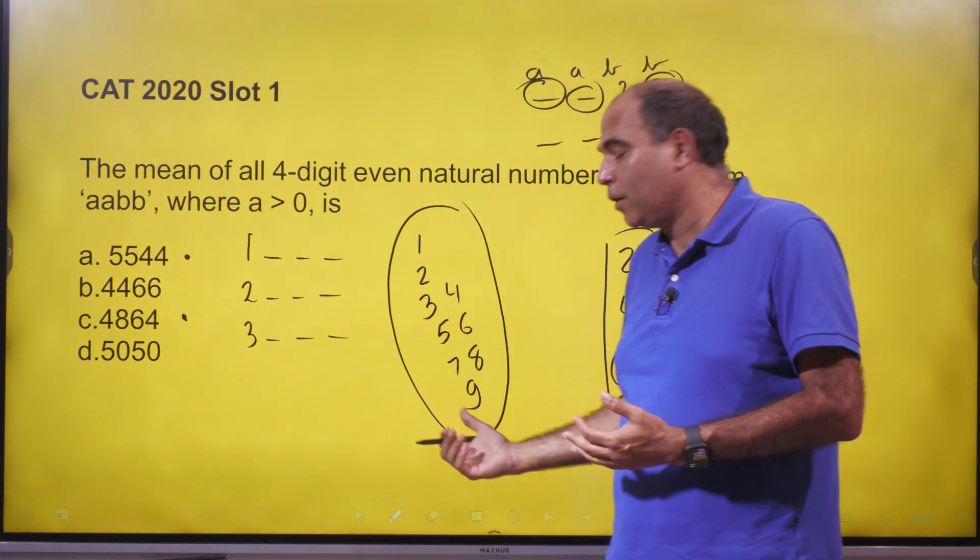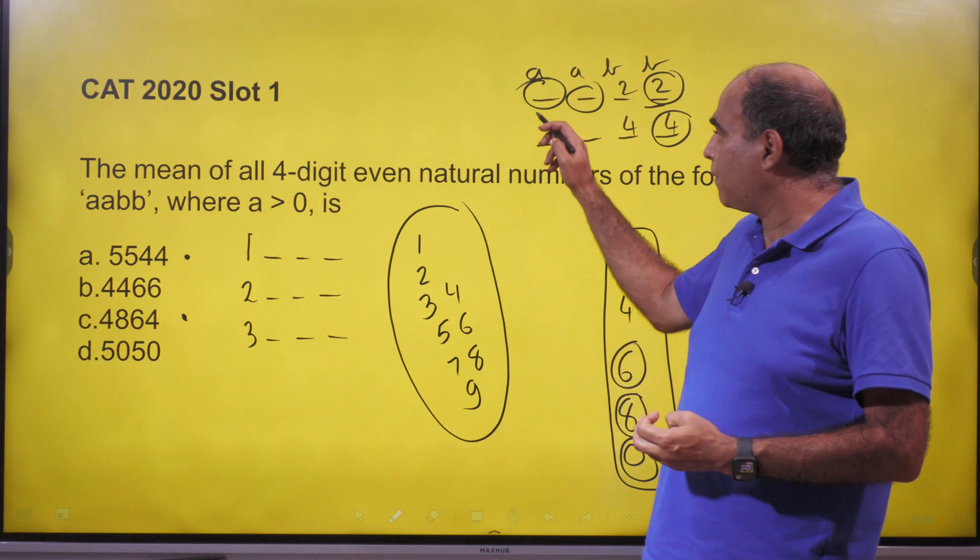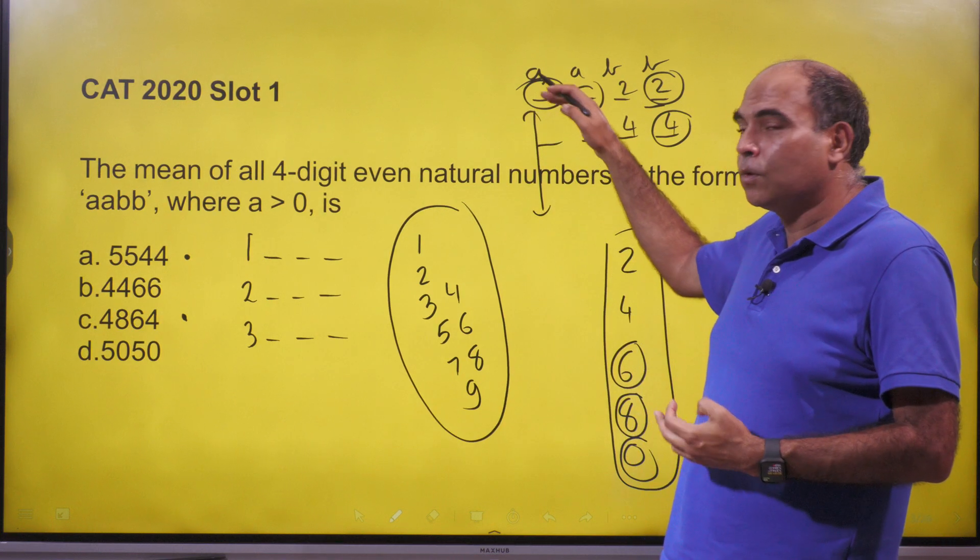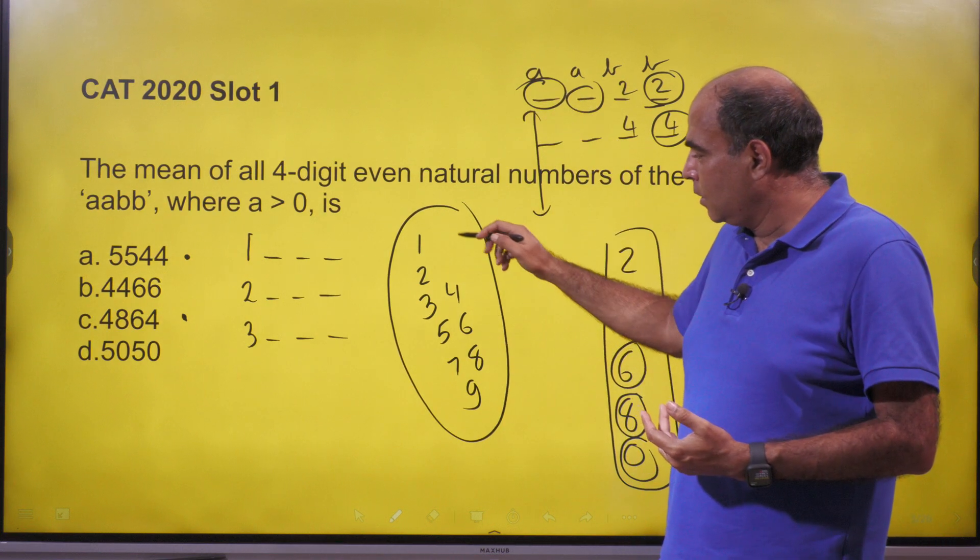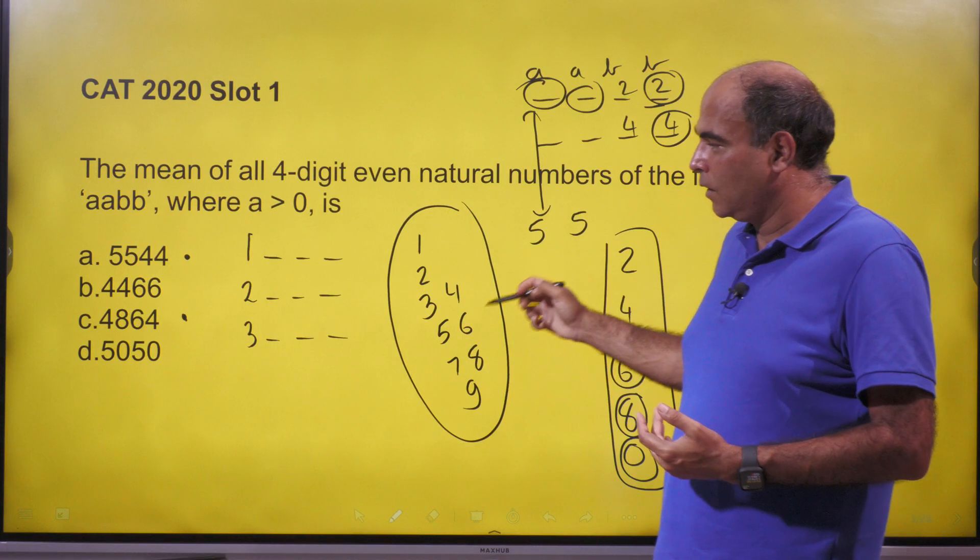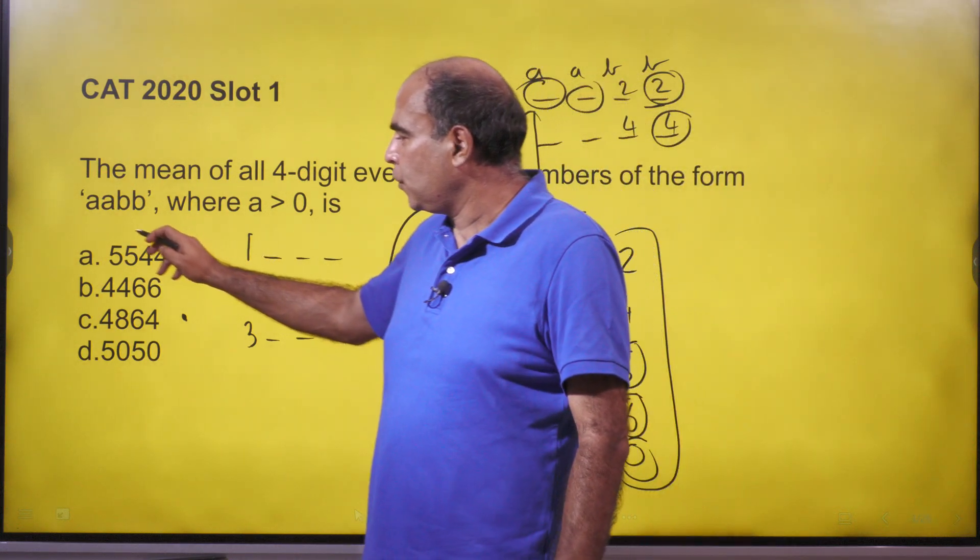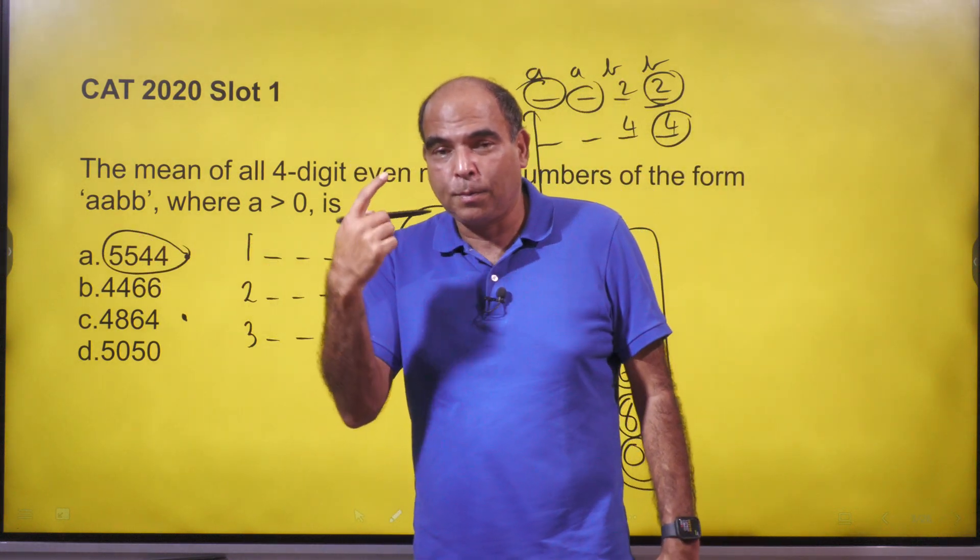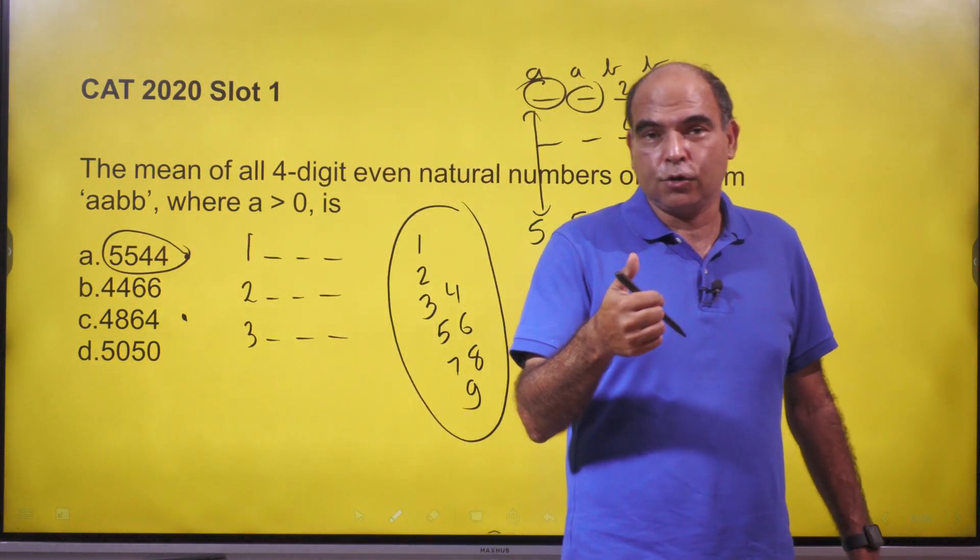Which means that the average of this column when I do the sum and divide by the number of numbers will just be the average of these numbers. And that means the average of these two columns is 5, and hence the correct answer is 5544. That's it, no pen work almost in this question. Thank you so much.